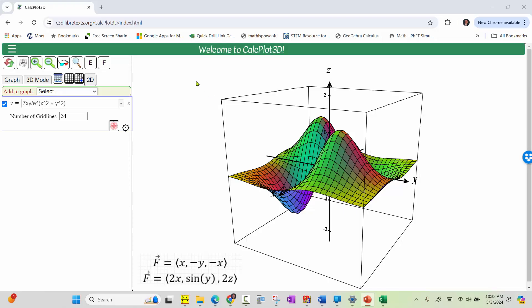When using CalcPlot 3D, this is always the initial or default graph. We need to turn this off or delete it. We can turn it off by clicking the check mark on the left or delete it by clicking the x on the right. I will click the x.